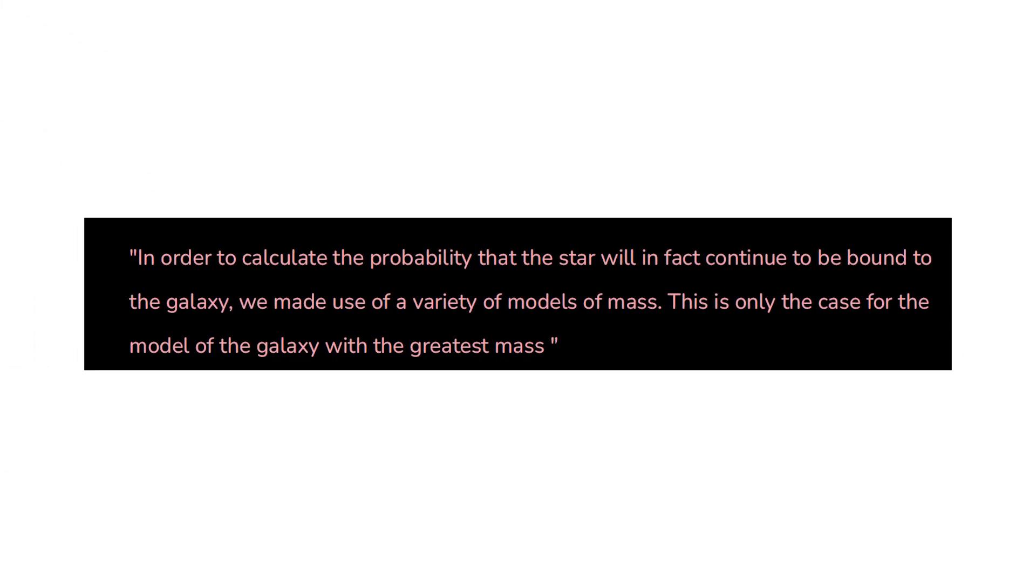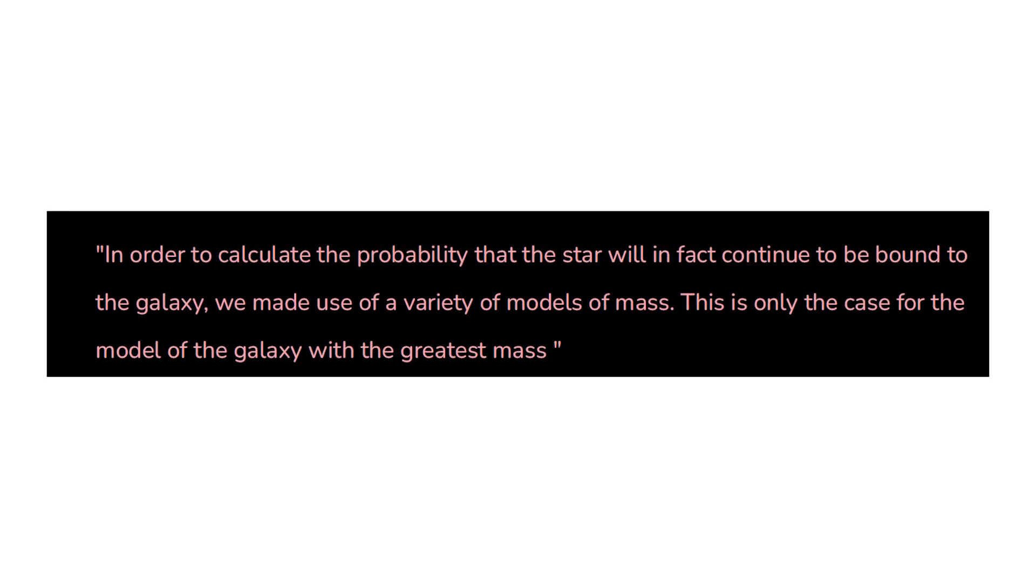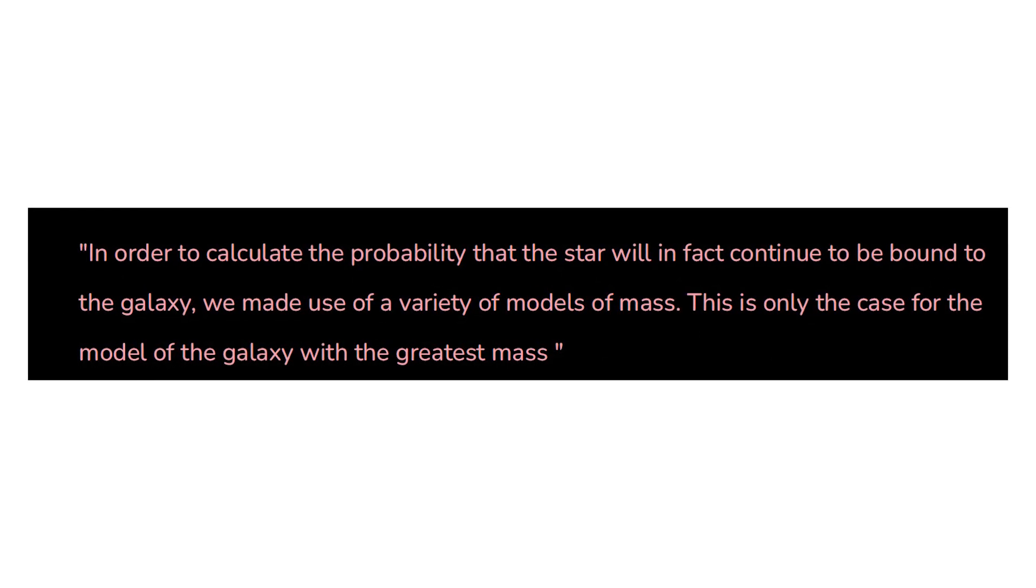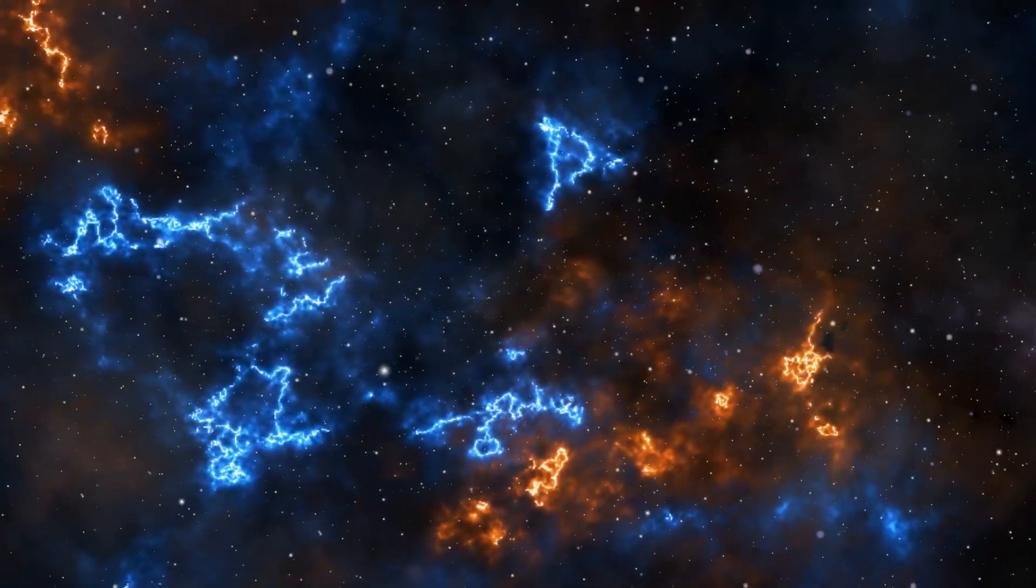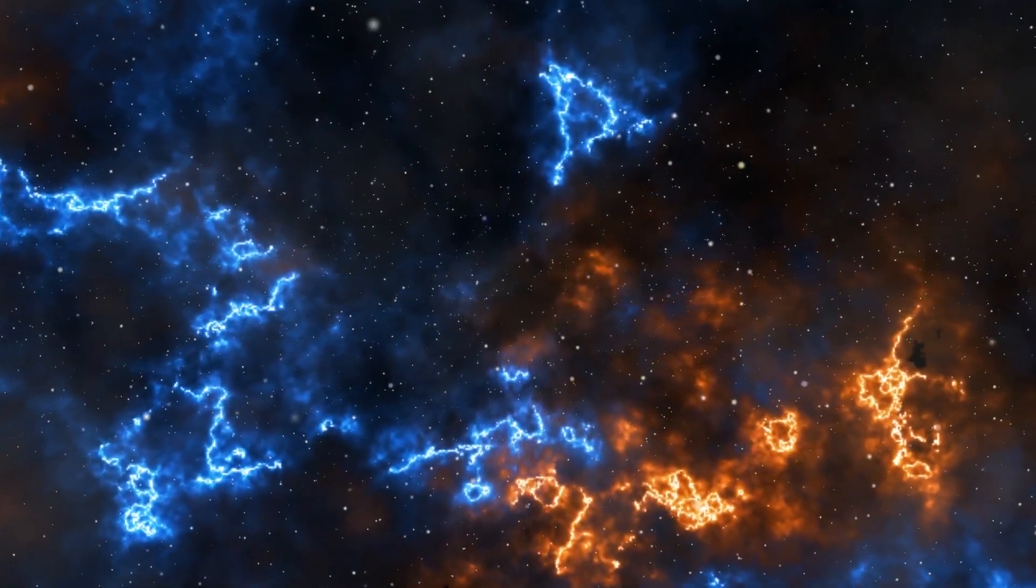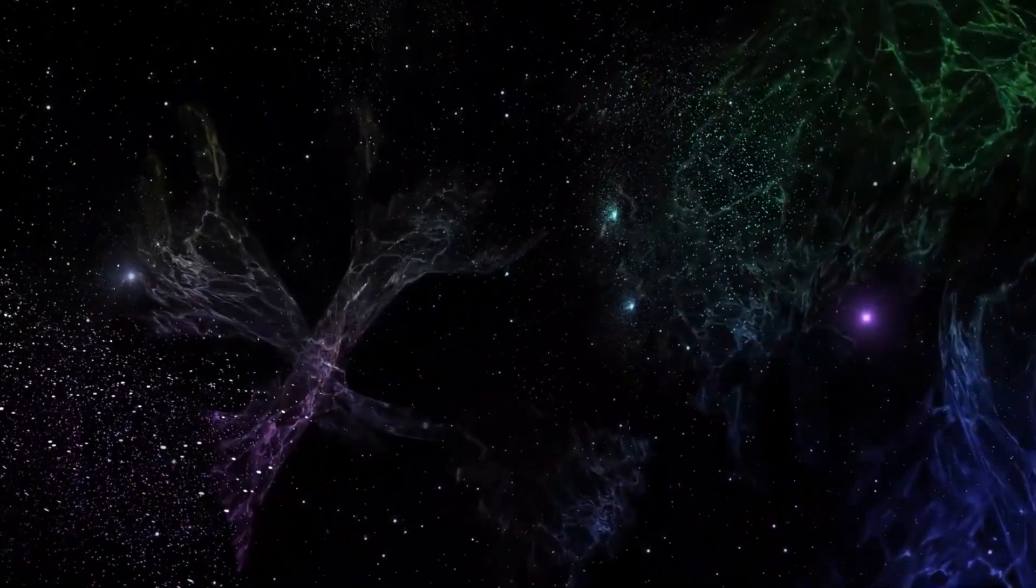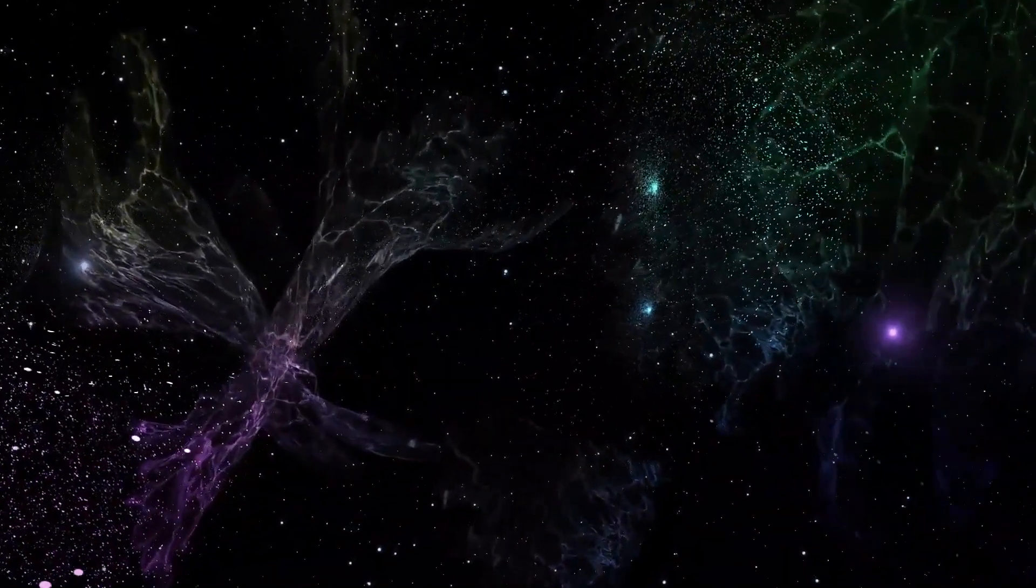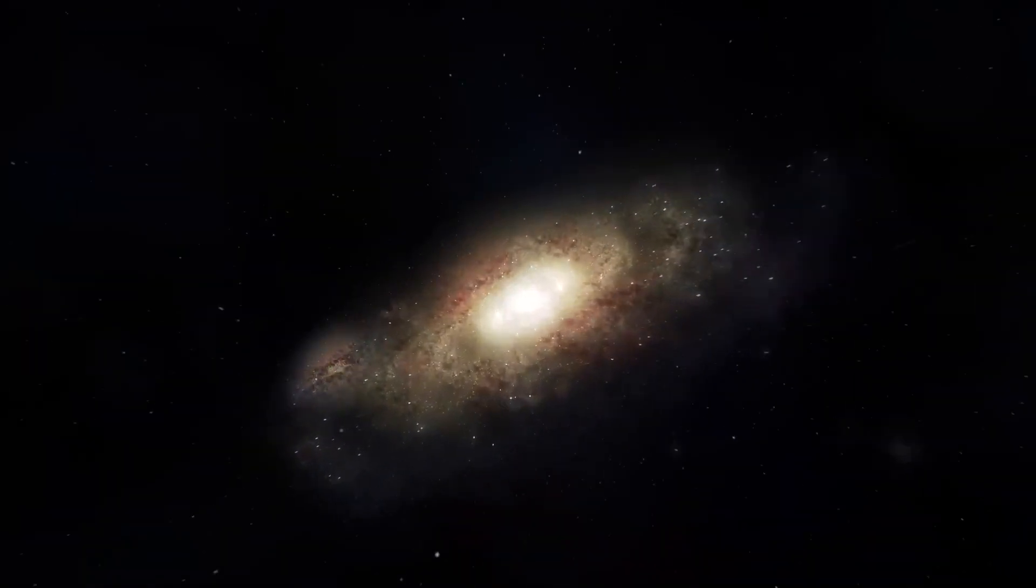In order to calculate the probability that the star will in fact continue to be bound to the galaxy, we made use of a variety of models of mass. This is only the case for the model of the galaxy with the greatest mass. Andreas Ergang, who works at Dr. Karl Remus Observatory in Germany, is one of the researchers who commented on the findings. Because of this, PB3877 is an excellent choice for use as a target to investigate dark matter halo models.